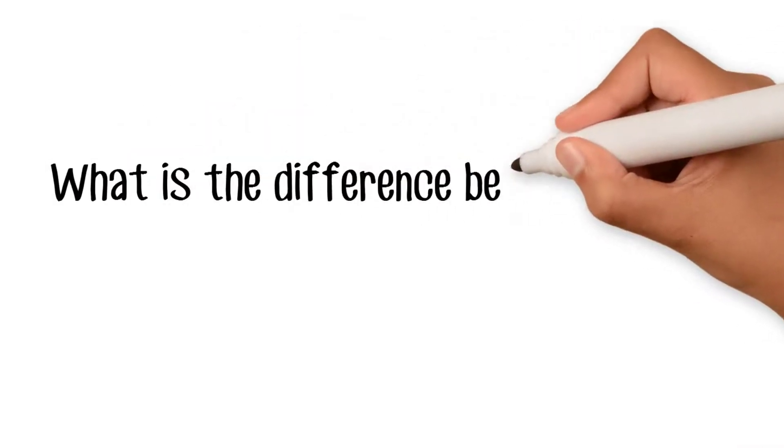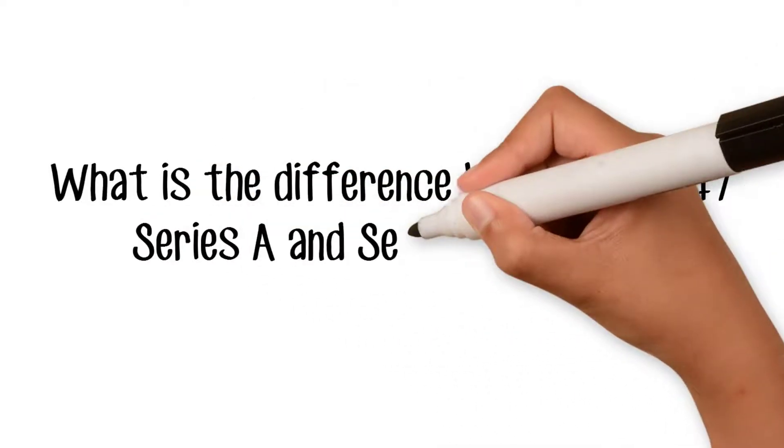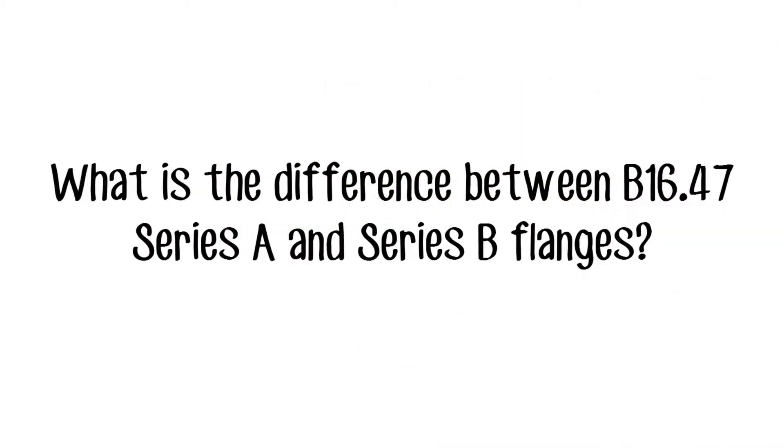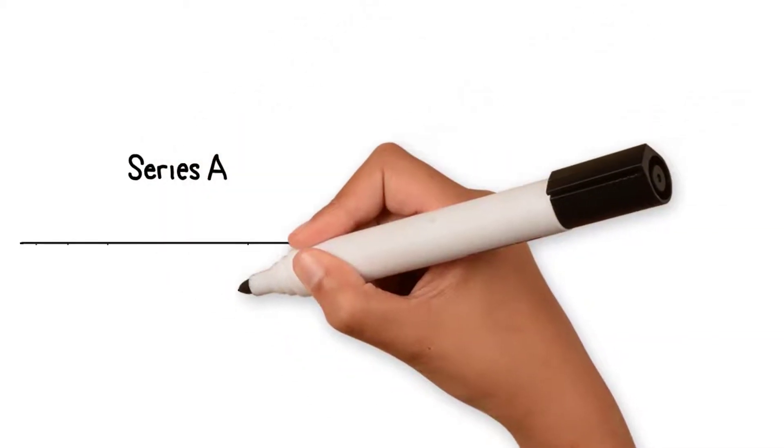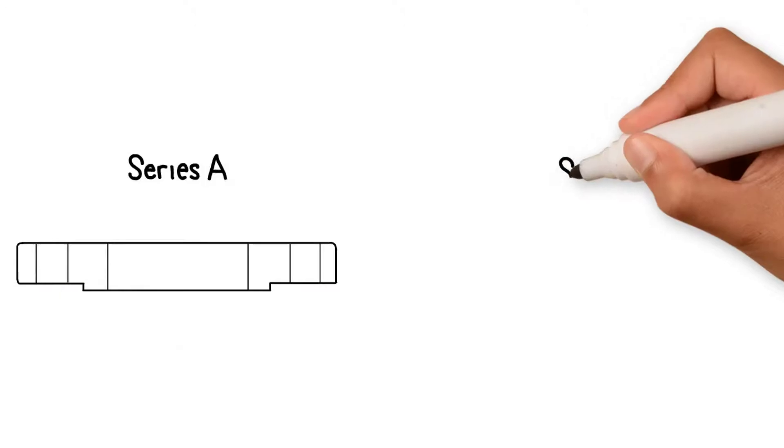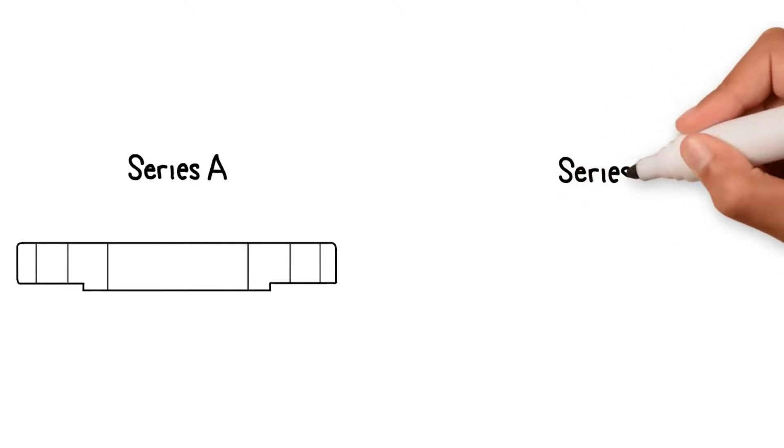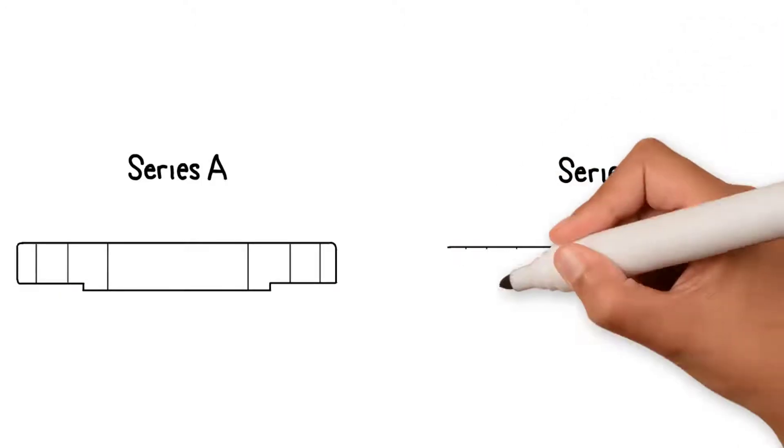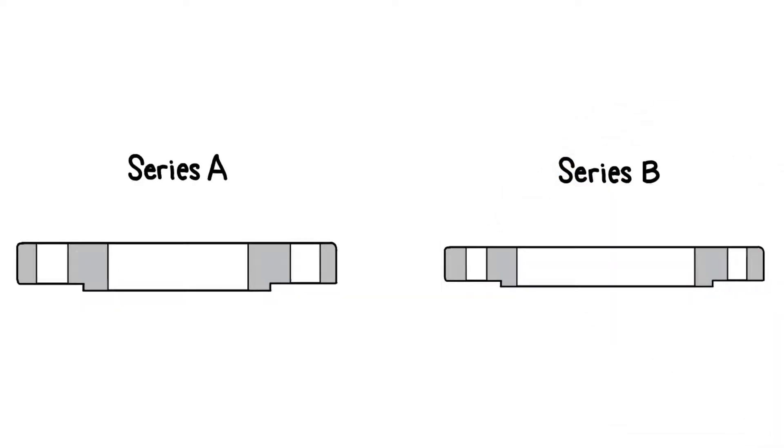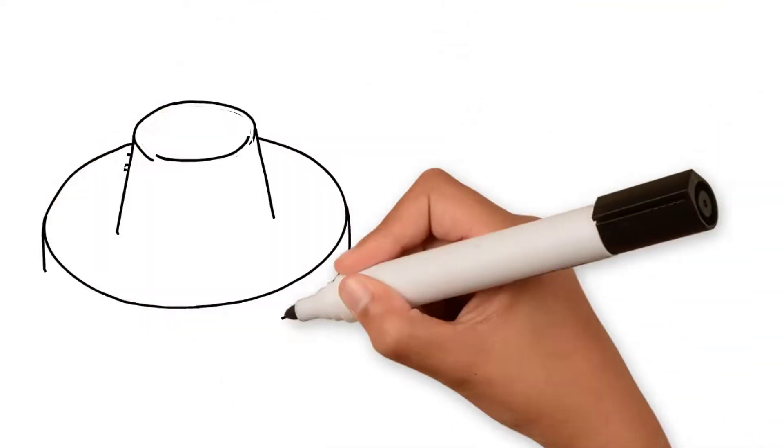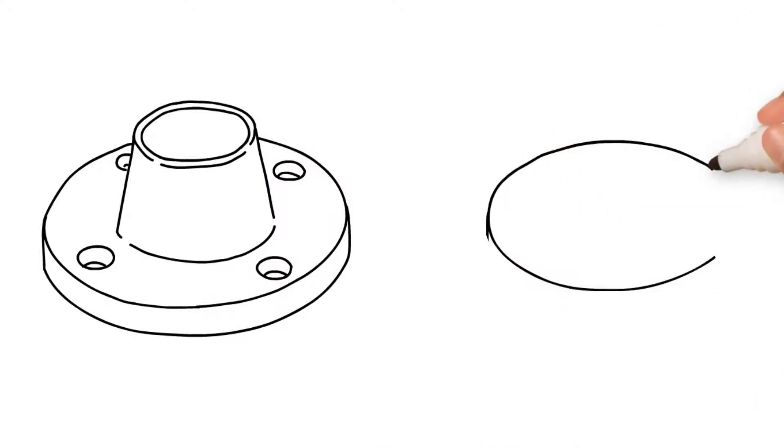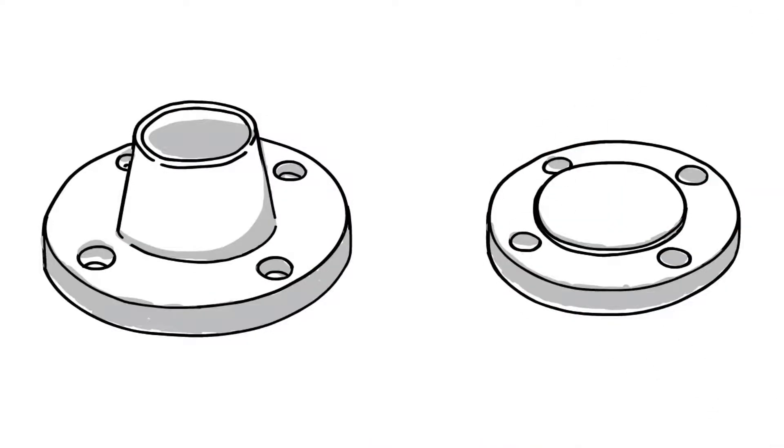What's the difference between B16.47 Series A and Series B flanges? Series A flanges are much thicker, heavier, and stronger than Series B flanges for the same pressure and size. Series A flanges can withstand more external loading than Series B flanges. Series B flanges need smaller fasteners in larger quantity than Series A flanges. They also have a smaller bolt circle diameter than Series A flanges. The smaller bolt circle diameter results in less flange movement after installation.